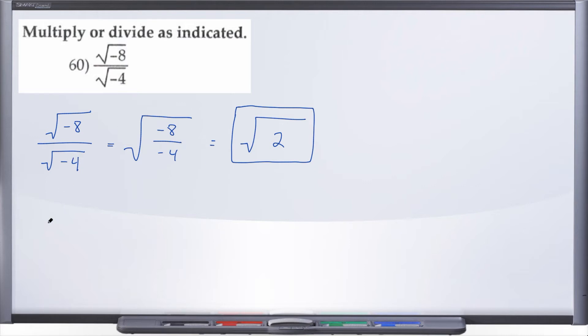Or what you could do is we're gonna take the original expression that we had, so radical negative 8 over radical negative 4, and we're gonna break each of our numerator and denominator into good stuff and bad stuff.